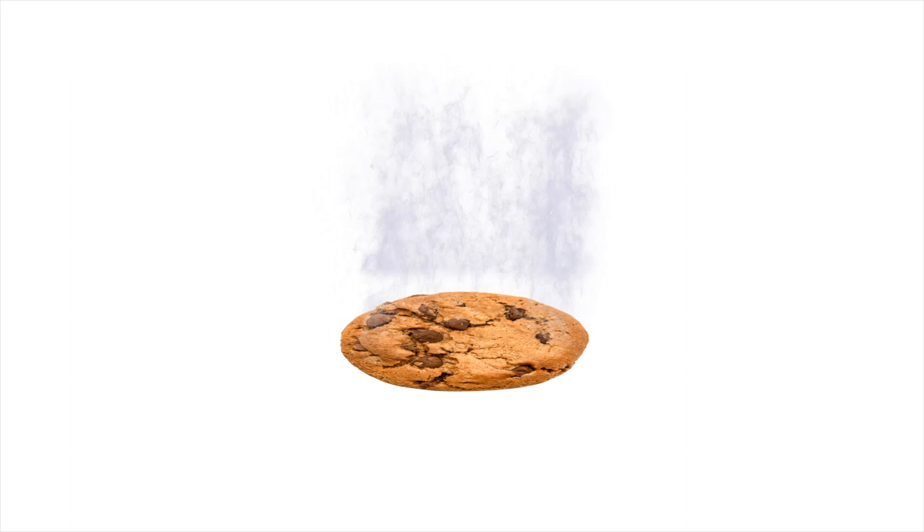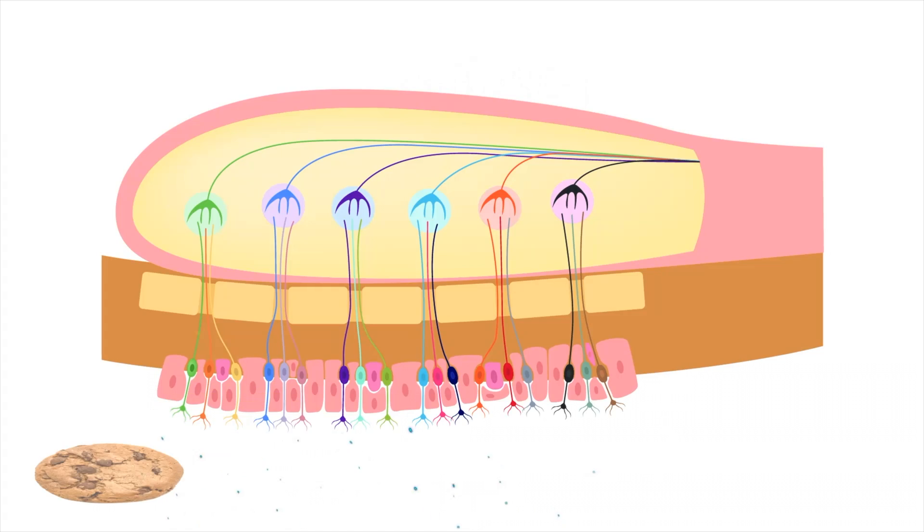For example, a cookie smell may be perceived when olfactory receptors number 30, number 216, number 223, and number 373 are triggered. Not only that, but number 30 must be activated by about 25%, number 216 by 5%, while 223 and 373 are fully activated at 100%.